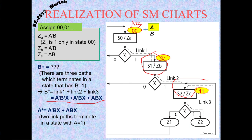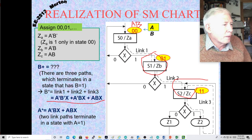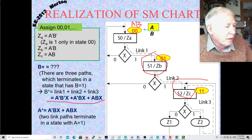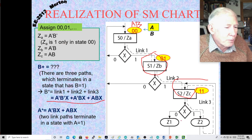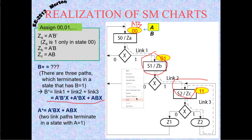Notice: no state table, no transition table, no K-maps needed — just the flip-flop state encoding and you're done. The Moore outputs are easy: ZA = A'B', ZB = A'B, ZC = AB. The Mealy outputs Z1 and Z2 are also easy: Z1 is associated with a link path in state S2 on X=0, so Z1 = ABX'; Z2 is on the path in S2 when X=1, so Z2 = ABX.